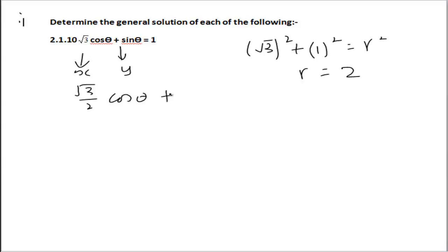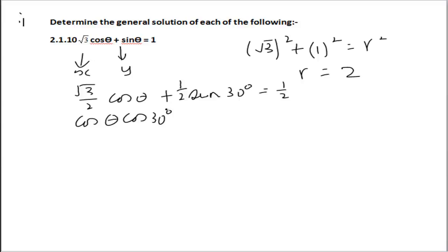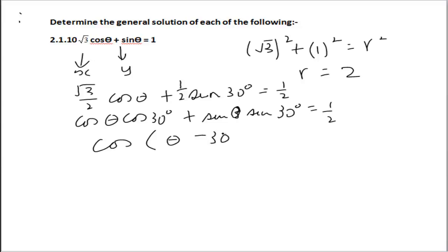Since r = 2, we have √3/2 cosθ + sinθ expressed in the form r·cos(θ + φ). This becomes a compound angle: cos(θ - 30°) = r. We now need to determine what angle gives us that cosine value.